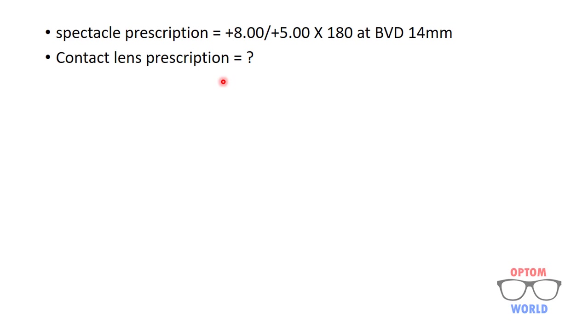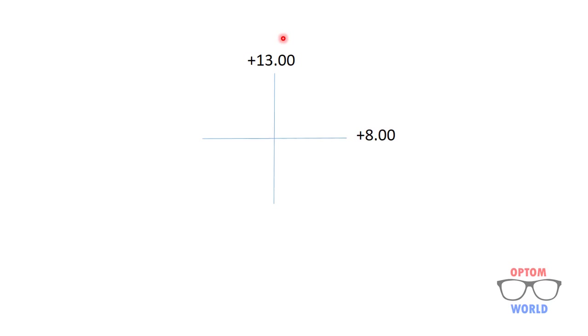The first step is to draw the optical cross for this prescription. Here we have plus 8 at 180 degrees, and at 90 degrees the cylinder is plus 5, so the power at the vertical meridian is plus 13 (8 plus 5). The optical cross for this spectacle prescription shows plus 13 at 90 degrees and plus 8 at 180 degrees.